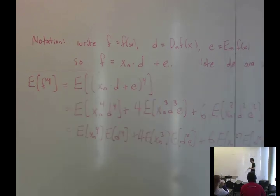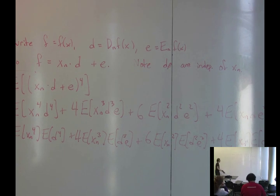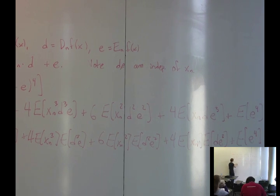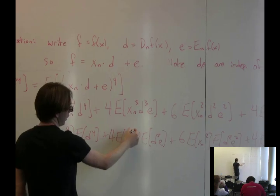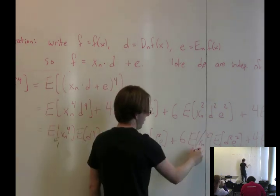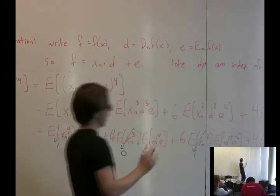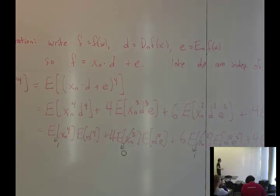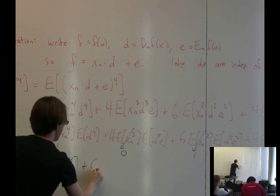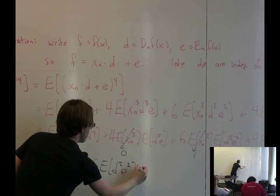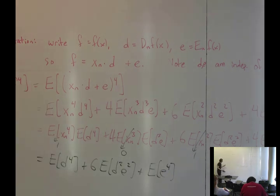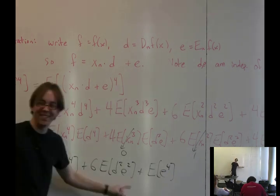Since x_n is ±1: E[x_n^4] = 1, E[x_n^3] = 0 (same as E[x_n]), E[x_n^2] = 1, and E[x_n] = 0. So things simplify greatly: E[f^4] = E[d^4] + 6E[d^2 e^2] + E[e^4]. We'll apply induction to the first and last terms; we need to think about what to do with the middle term.